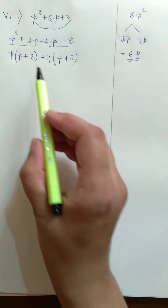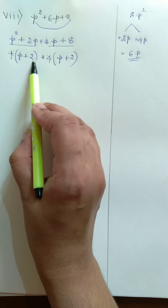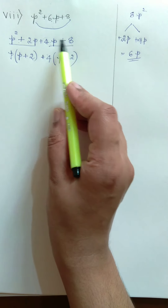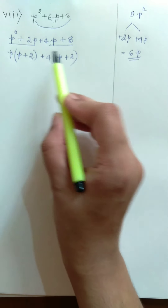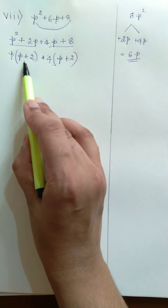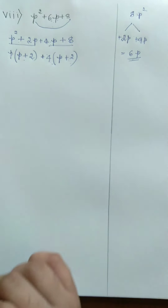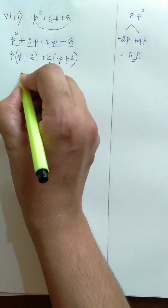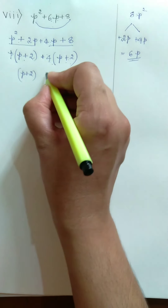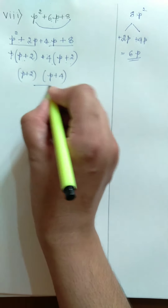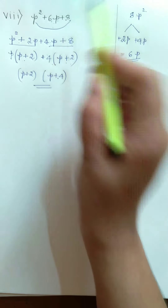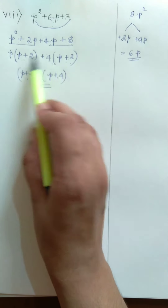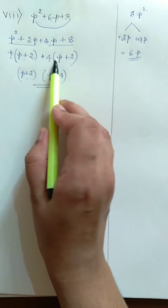Remember that in the first group we got P plus 2, and in the second group, after taking out the common factor, we also get P plus 2. Both groups give the same value. Therefore, P plus 2 is the common factor of these two terms, and the remaining is P plus 4. The required factorization is P plus 2 into P plus 4.